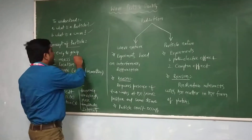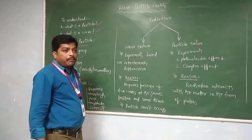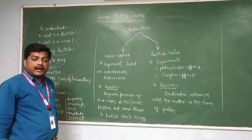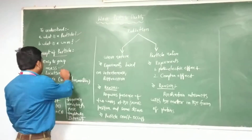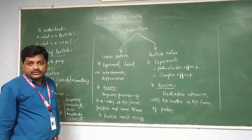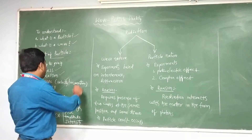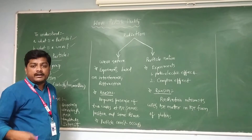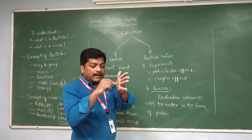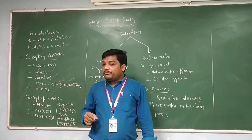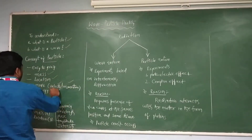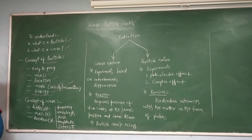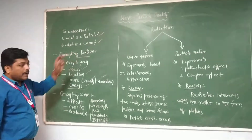The particle has some definite mass and the particle can move from one place to another place, and we can also locate the particle. Whenever the particle is in motion, it has some velocity, and whenever the particle has velocity, it has some momentum. The particle gives us energy when we slow down or stop it. So the particle can be specified by its mass, its velocity, its momentum, and its energy. These are the terms which indicate a particle.